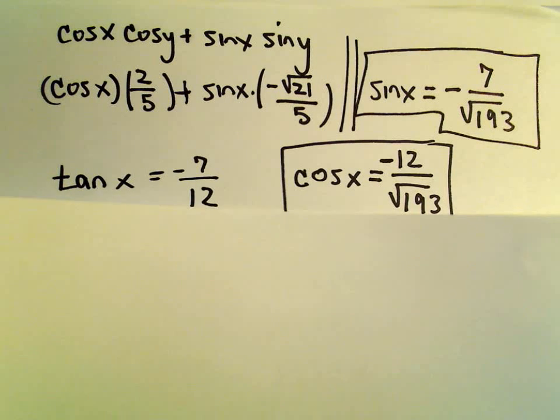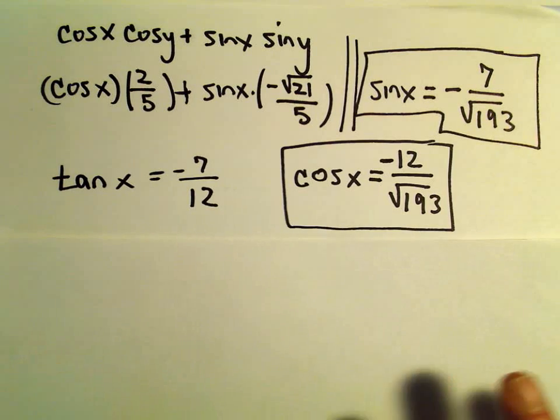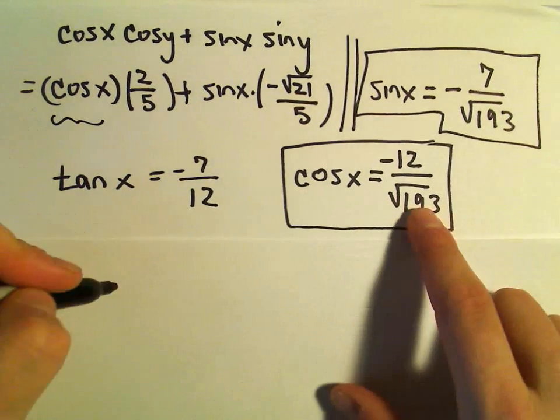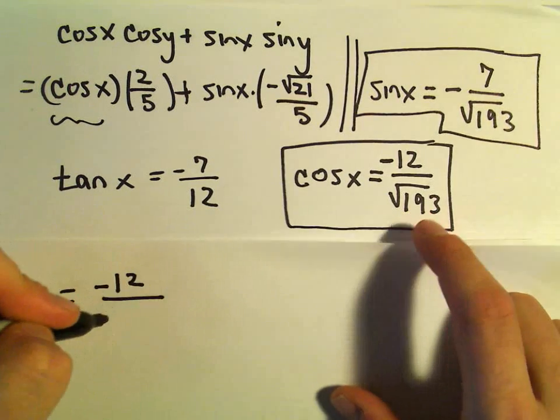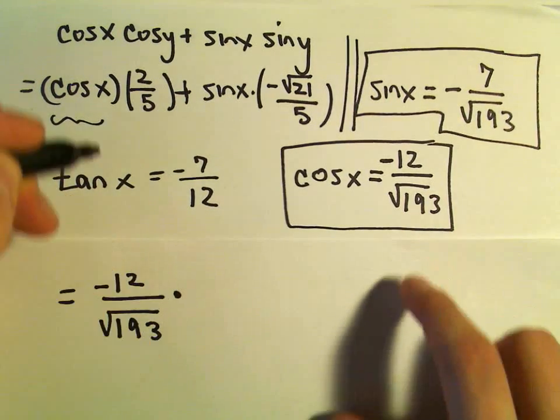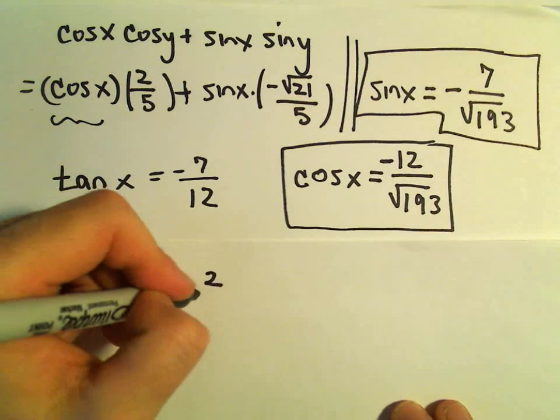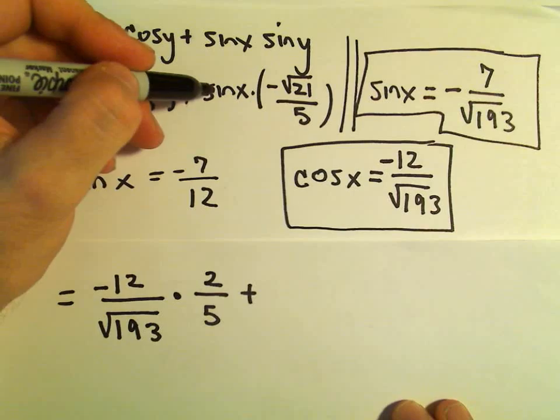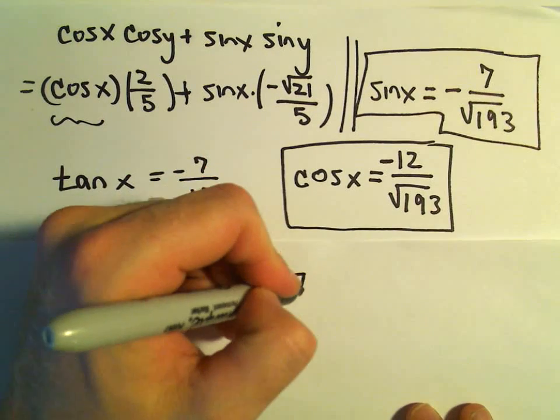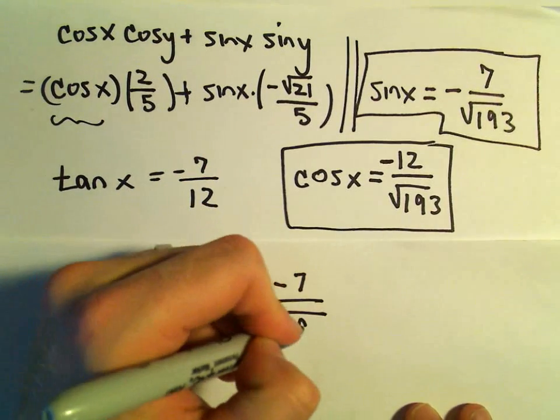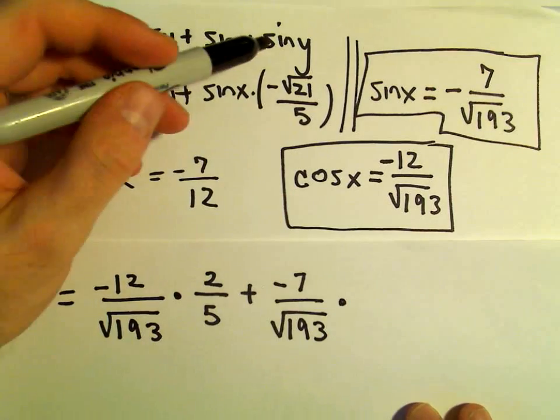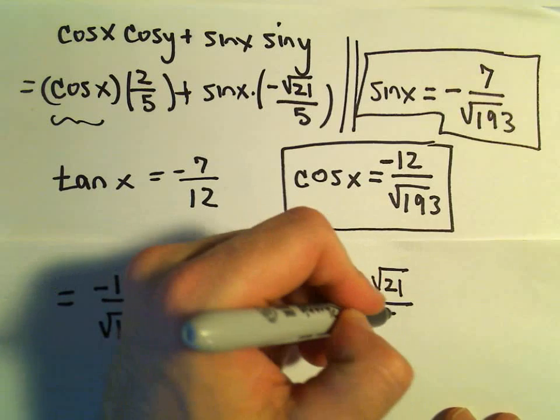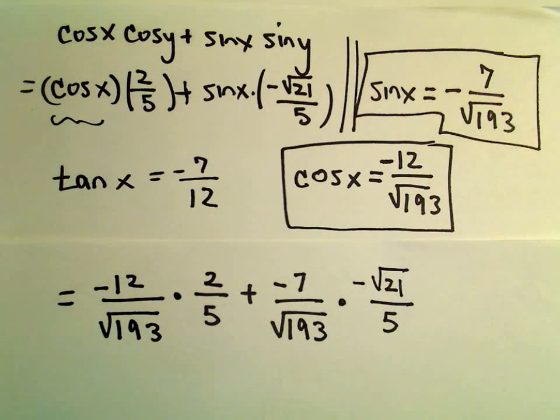And now we're in a position to evaluate this. We now know our value for cosine x—that's negative 12 over the square root of 193. We can multiply that by 2 over 5. Then we can add to that our value for sine x, which is negative 7 over the square root of 193, times sine y, which is the square root of 21 over 5.